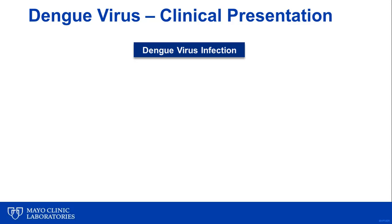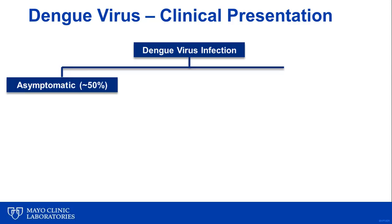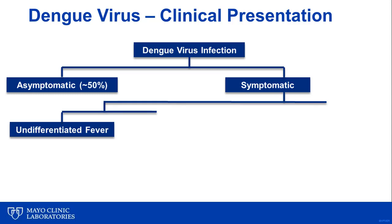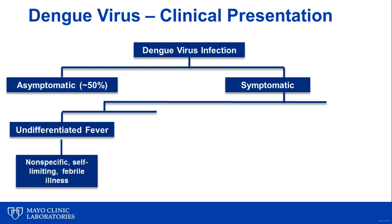With regards to clinical presentation, following exposure to the virus, approximately 50 percent of individuals will remain entirely asymptomatic. The remaining 50 percent of patients can present with one of three disease manifestations. The first of these is an undifferentiated fever, which presents with nonspecific symptoms very similar to other causes of acute febrile illness. For many of these patients, unless specific dengue virus testing is performed, the diagnostic cause will remain unknown. These patients are typically younger children or those experiencing their first dengue virus infection and typically recover on their own without need of medical attention.